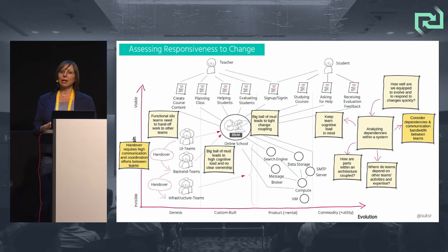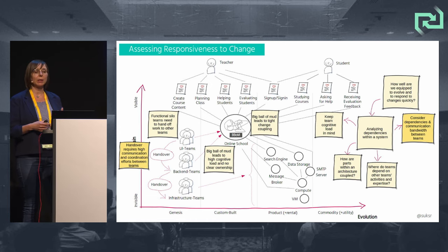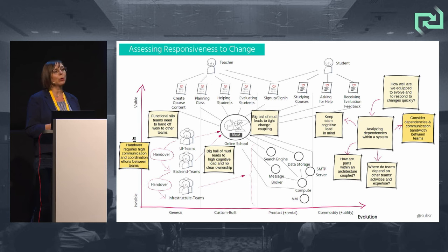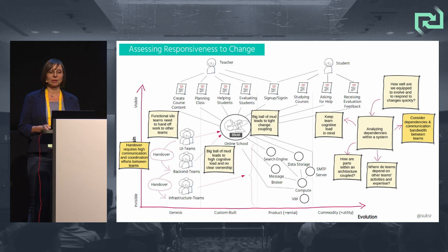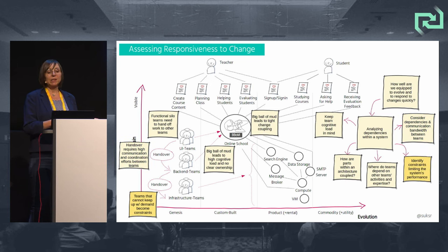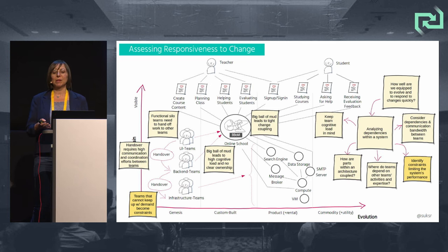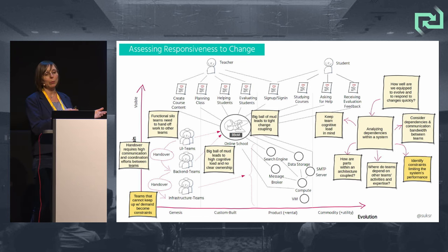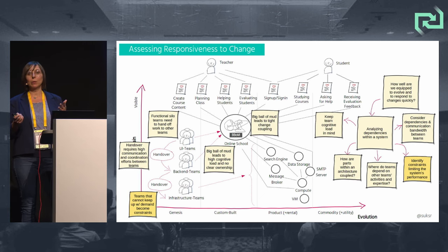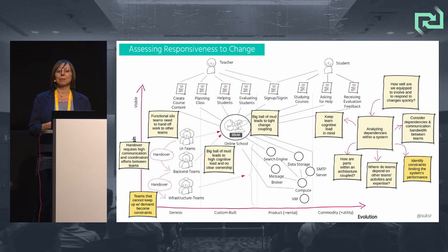That handover requires a high amount of ongoing and frequent communication and coordination efforts between multiple teams to implement and deliver changes. If teams cannot keep up with the demand placed on them, their work piles up, causing other teams to wait — their work cannot be completed and delivered, so they become constrained. And constraints in the system dictate the system's overall performance.